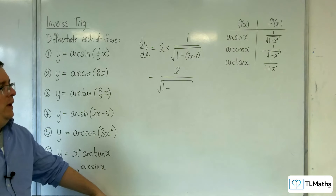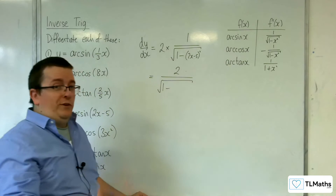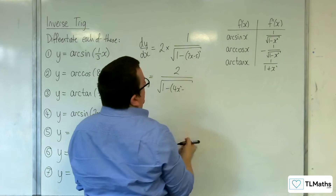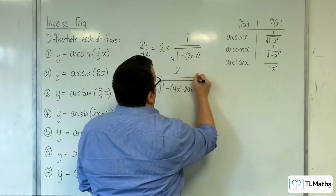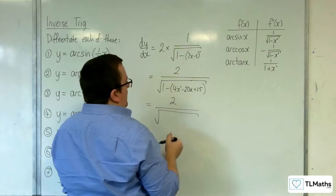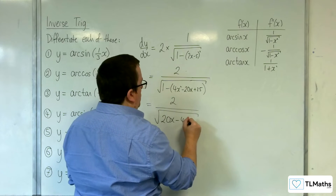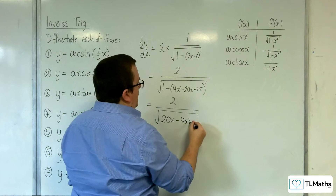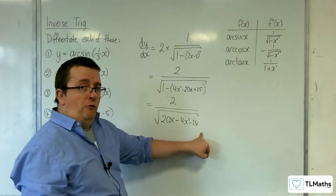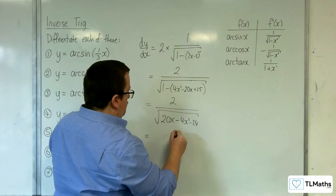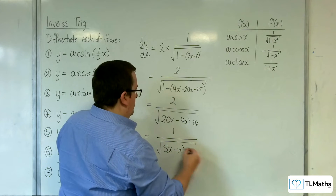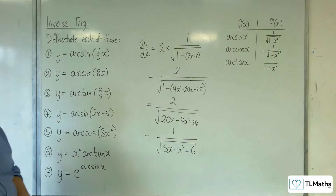We can expand this if we like — it depends on the format the question requires. Expanding (two x minus five) squared gives four x squared minus twenty x plus twenty five. So we have two over the square root of twenty x minus four x squared minus twenty four. Factoring the four out and taking the square root cancels the two in the numerator, leaving one over the square root of five x minus x squared minus six. That's probably as simplified as it gets.